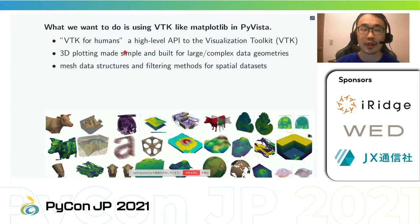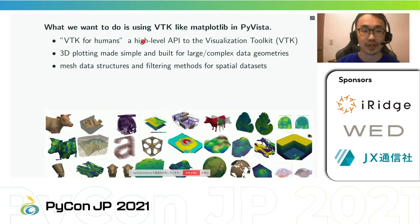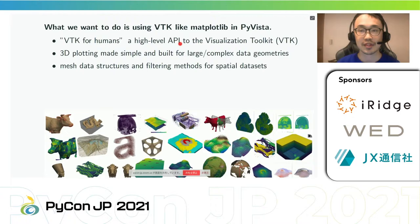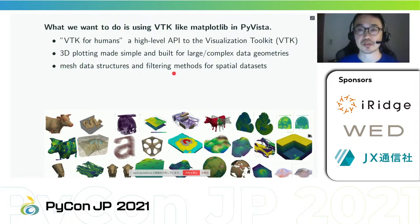Do you want to visualize 3D data in a Pythonic way like Matplotlib? If you want this, this slide is for you. VTK is an excellent visualization toolkit and with Python binding it should combine the speed of C++ with rapid prototyping of Python. However, VTK code written in Python generally looks the same as its C++ counterpart. This module seeks to simplify mesh creation and plotting without losing functionality. This slide is an introduction to PyVista — VTK for humans — a high-level API to the Visualization Toolkit, with 3D plotting made simple, built for large complex data geometries, mesh data structures, and filtering methods for spatial data sets.